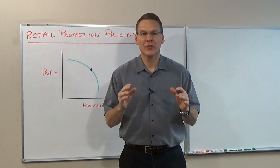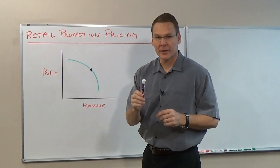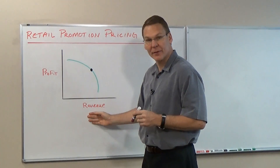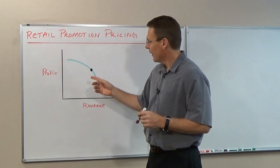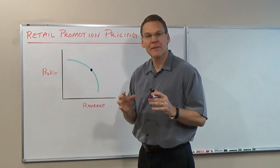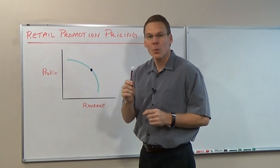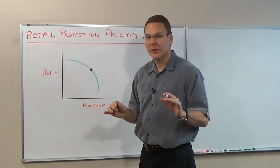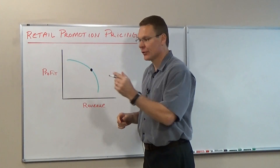In a previous video, we described the regular opportunity curve showing the trade-offs between revenue and profit for regular prices. This point shows the profit and revenue at current regular price. When this item is promoted without a price decrease, profit and revenue increase.